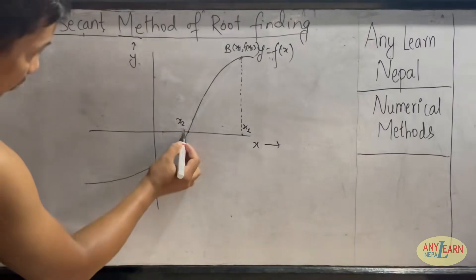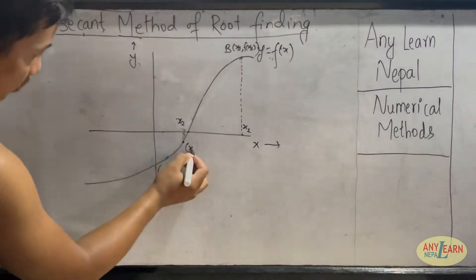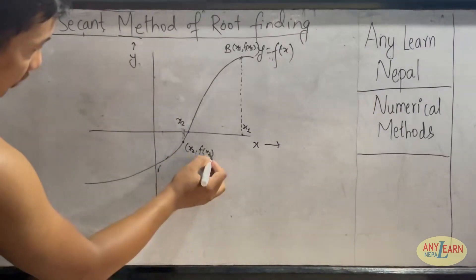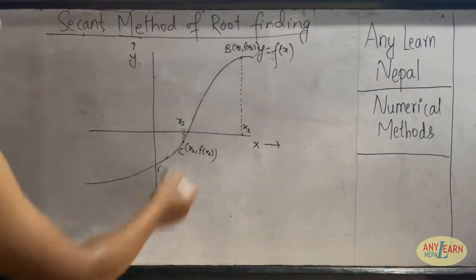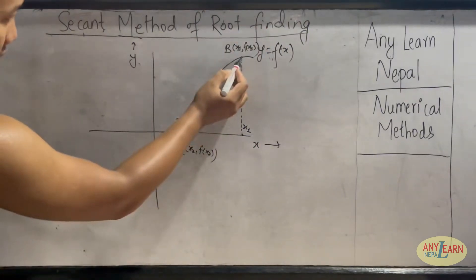Now we have to restart the process with this x2 and this x1. So let's find the corresponding point. This is (x2, f(x2)), and the x1 corresponding point is already there. Now let's say this is point C. Now we have to join B and C.